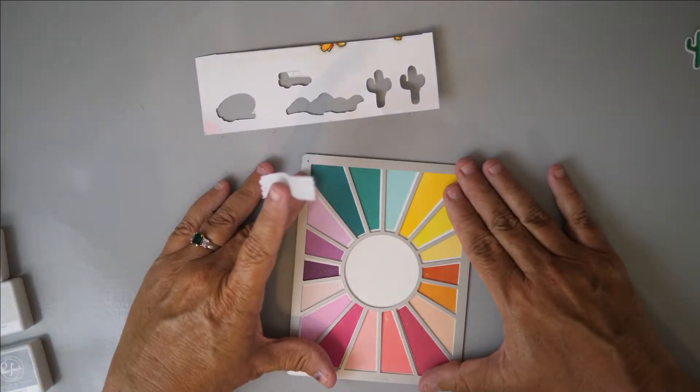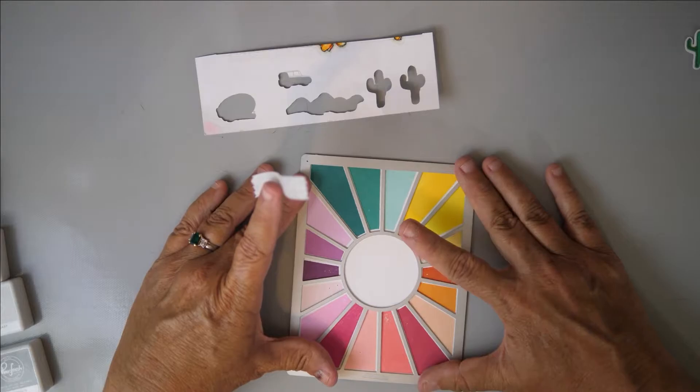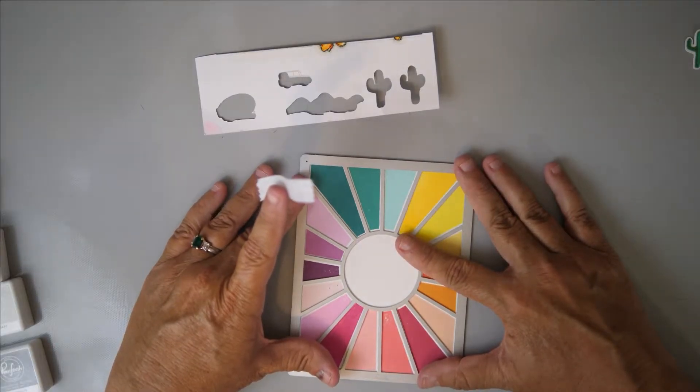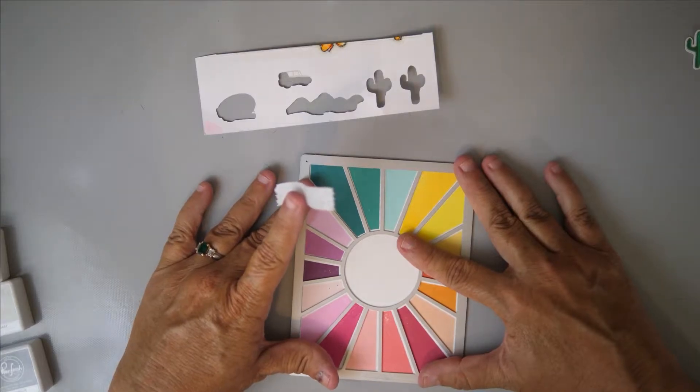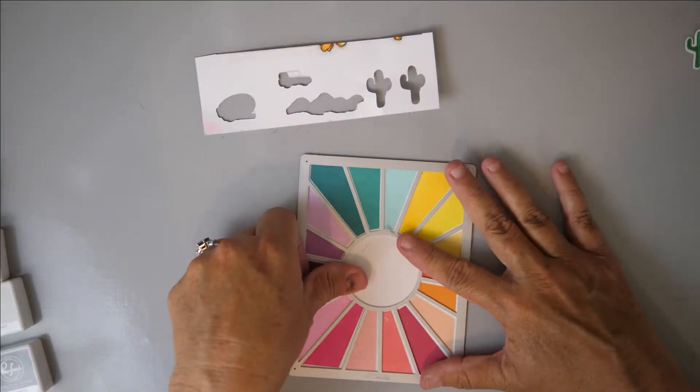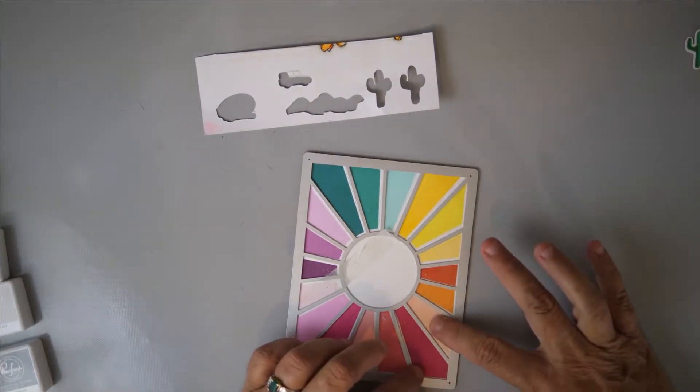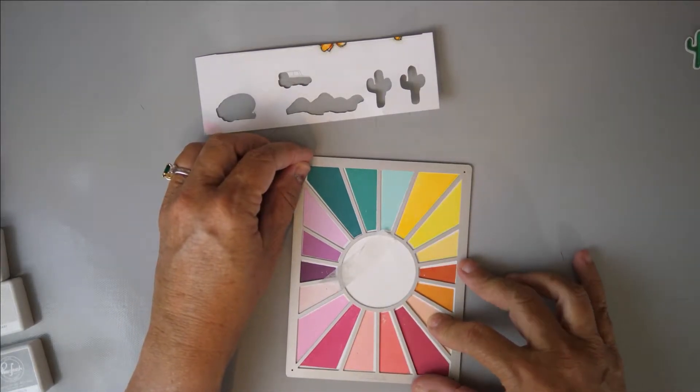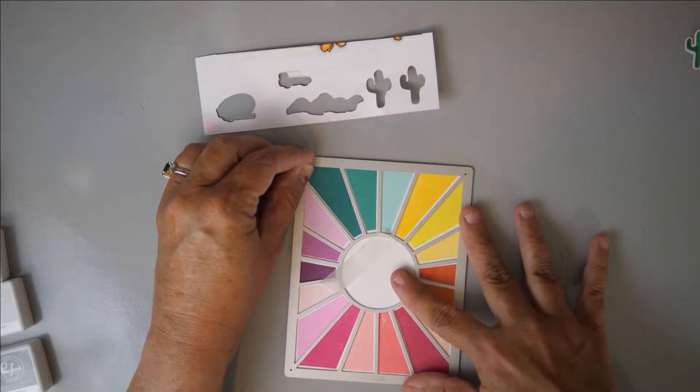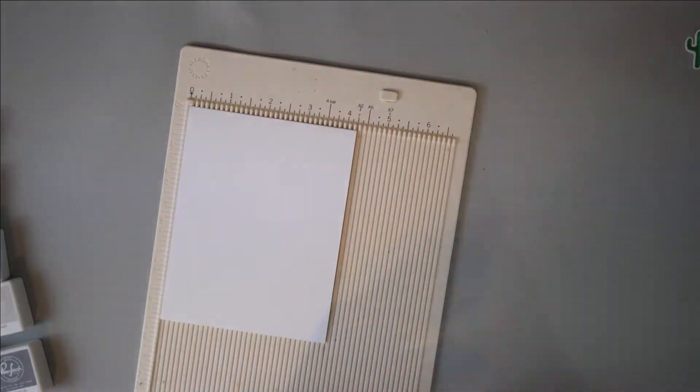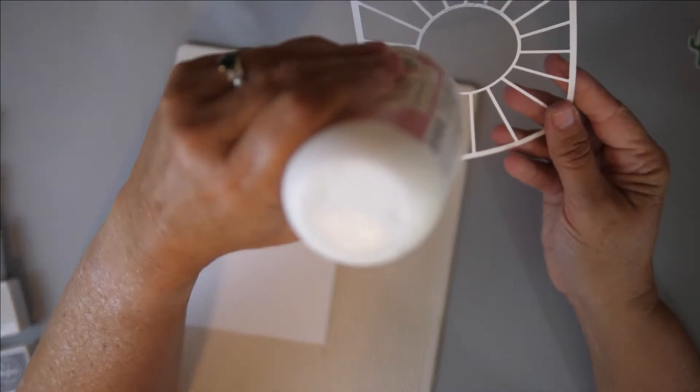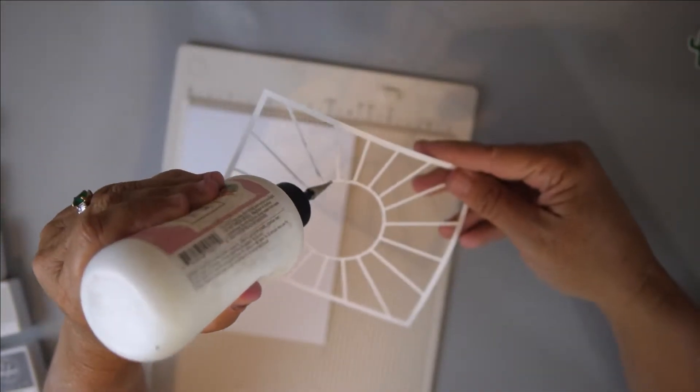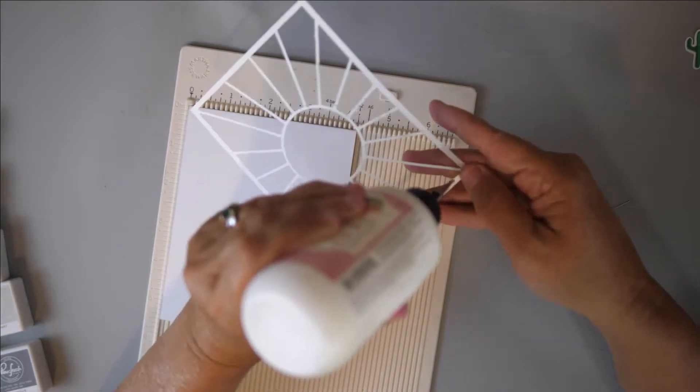Now in order for me to pop up my little sun rays I need to cut them out as well. So I'm using that same die and I am going to take it over to my Gemini Junior and I will run it through and then all of those little pieces will come out and pop apart. I don't have another frame to use because I don't get it lined up perfectly which is just fine. Everything looks beautiful regardless.